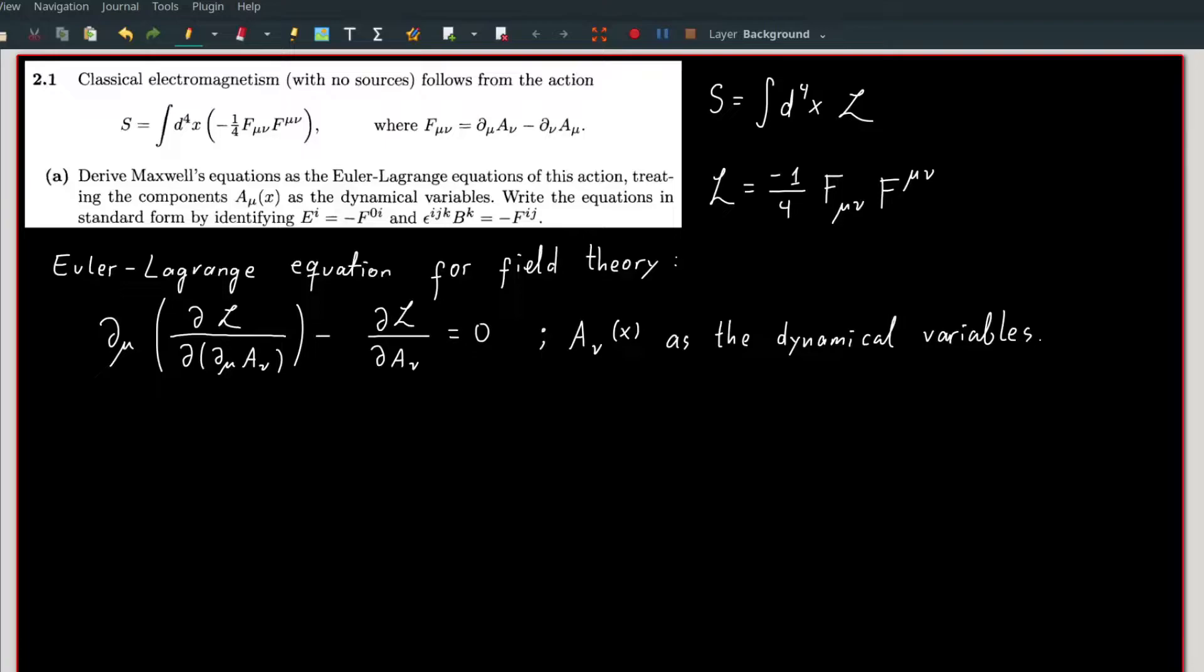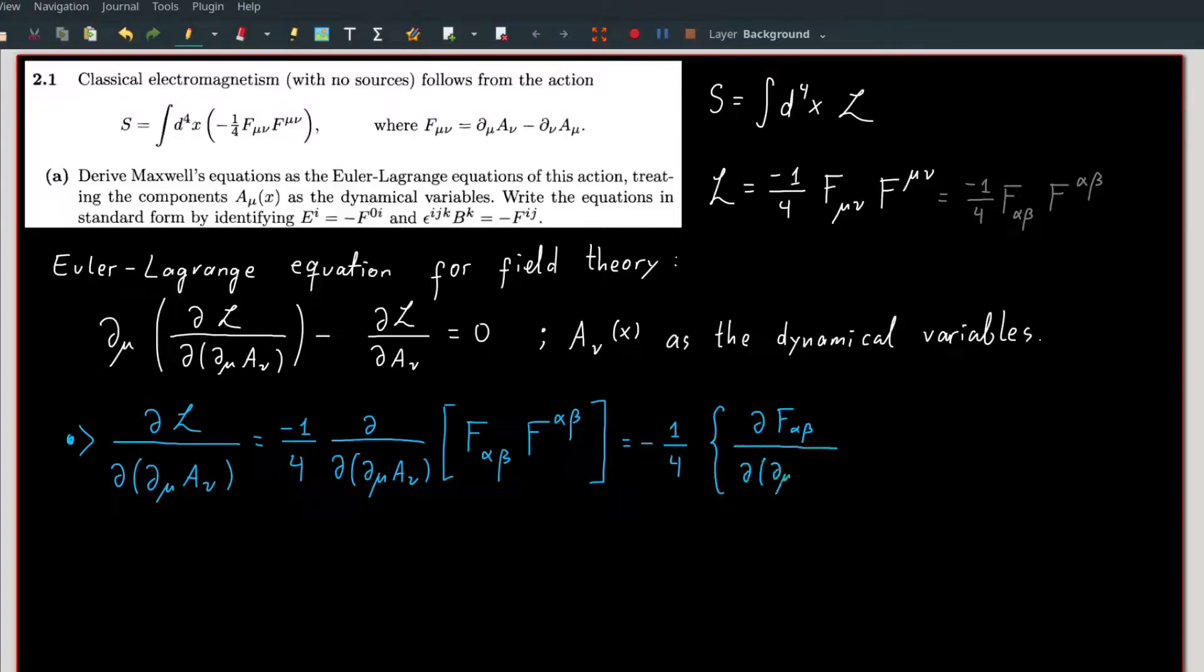Working on the first term of the equation, we substitute in L. Here I change the indices mu and nu to alpha and beta in the Lagrangian to avoid index conflict. We can do that because mu and nu in the Lagrangian are dummy indices. We can then use the product rule on the product of f inside the derivative.